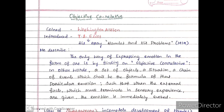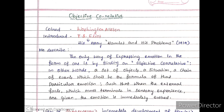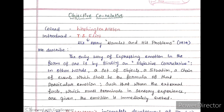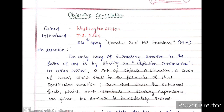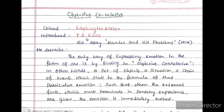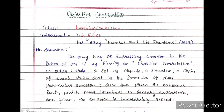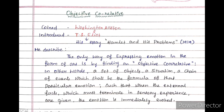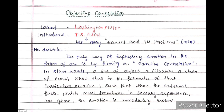Hello friends! In this video, let's talk about objective correlative — a little-known term. This term is attributed to Washington Allston, but it is T.S. Eliot who popularized it. Let's talk about this term in relation to Hamlet and this problem.